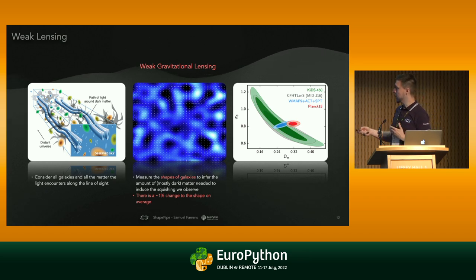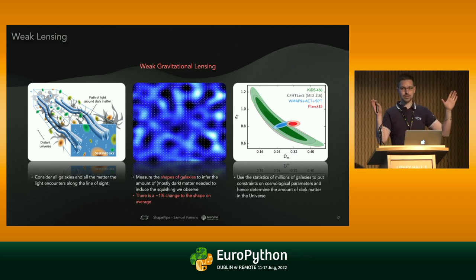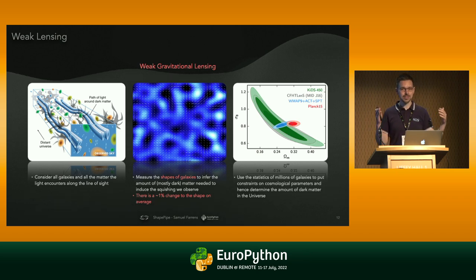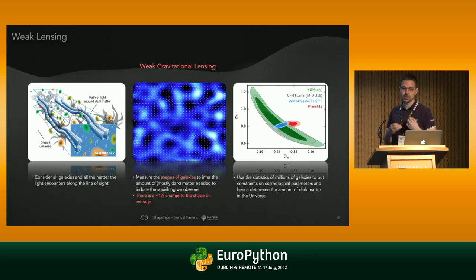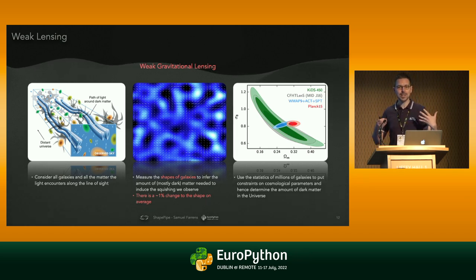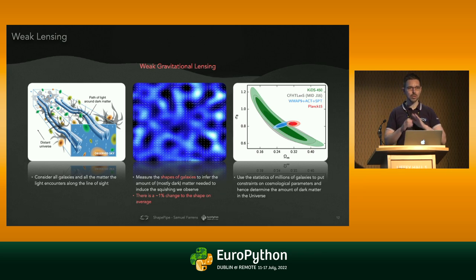Once we can measure the shapes of all the galaxies in the universe very accurately with lots of statistics, we can use this to constrain our cosmological parameters. This is a plot of omega matter — the matter density of the universe — against sigma-eight, and it allows us to fix the values of that pie chart I showed at the beginning. When we want to know what fraction of the universe is made up of dark matter, this is how we do it — and this weak lensing process allows us to do that.